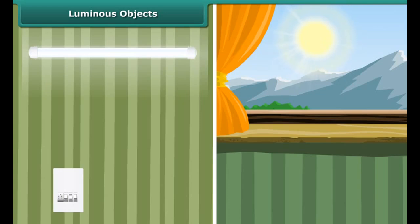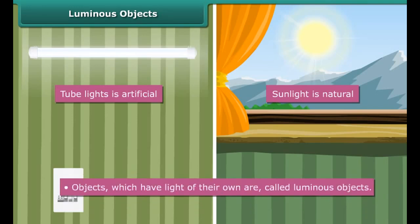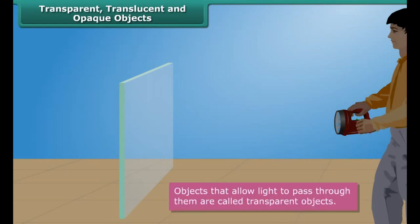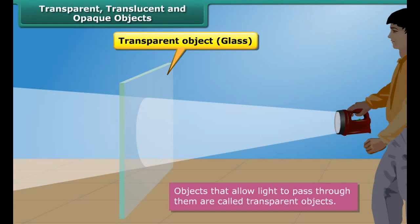You are getting late for school and cannot find your socks. You search in the cupboard, and since it is dark you switch the tube lights on. Once you locate the socks you switch the lights off because there is sufficient daylight. We just talked about two types of light: the light from tube lights and daylight from the Sun. Sunlight is natural light, while tube lights are artificial. Objects that have light of their own are called luminous objects. Both the Sun and tube lights are luminous objects — the Sun is a natural luminous object and tube lights are artificial, man-made luminous objects.